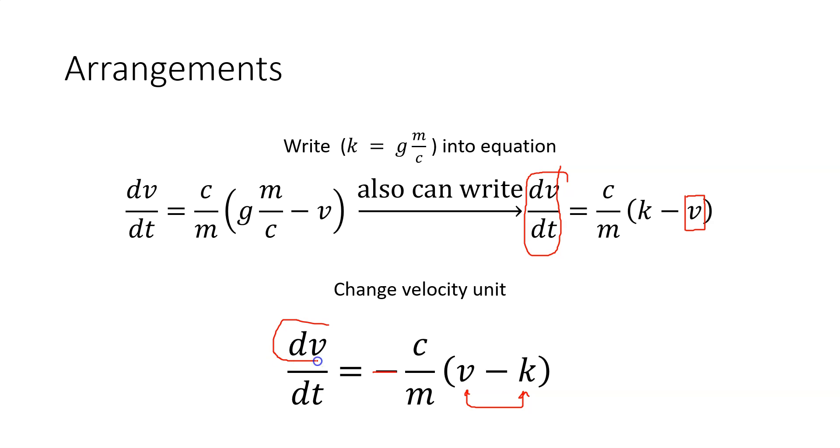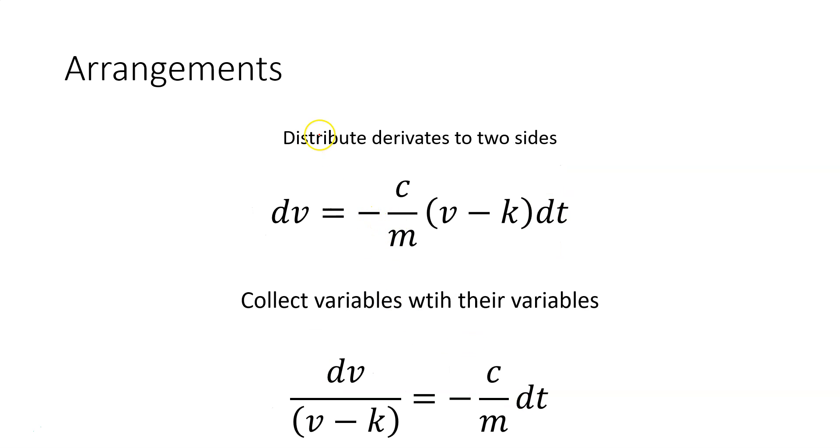Now, we haven't finished the arrangements. As you see here, we have two derivatives, dv and dt, and also our variable is v. Therefore, I want to distribute these derivatives and variables to their sides. First, I have moved the dt to the right side, and since dv is at the left side, I want to move v minus k to the left side. Our last form of the equation is dv/(v - k) = -c/m dt.